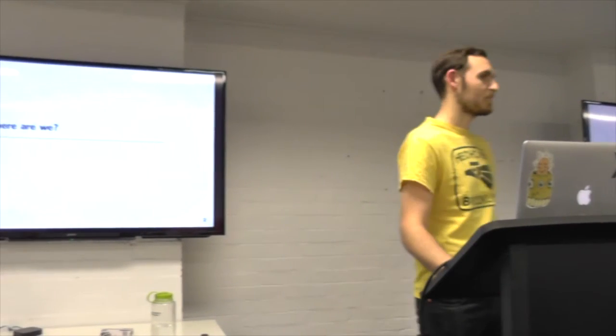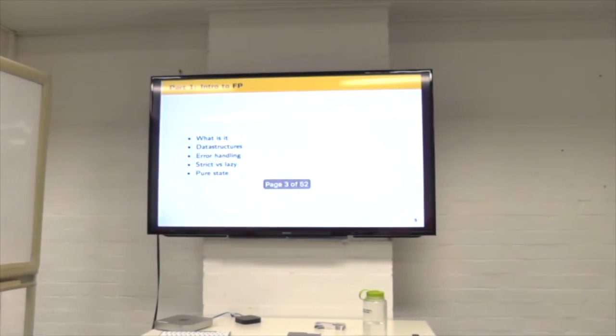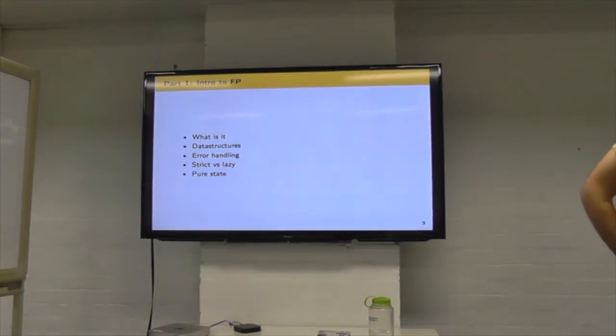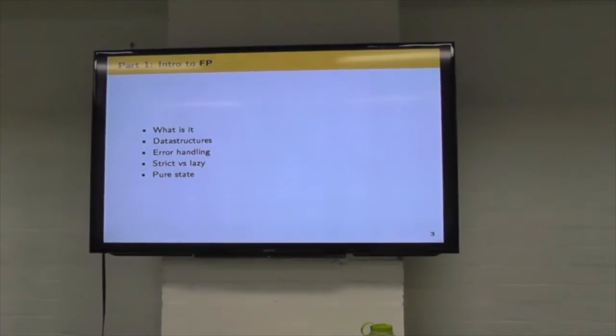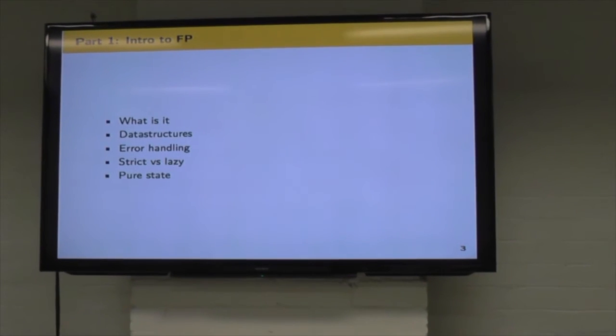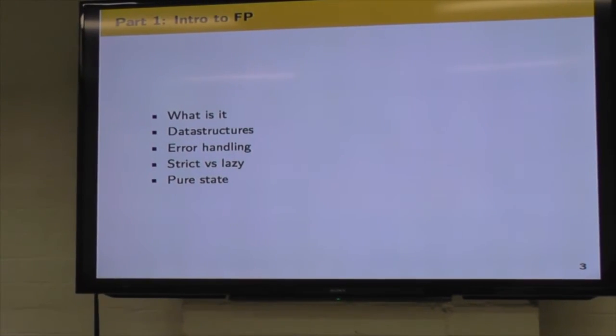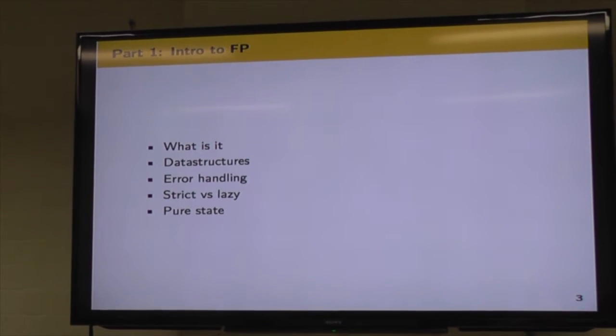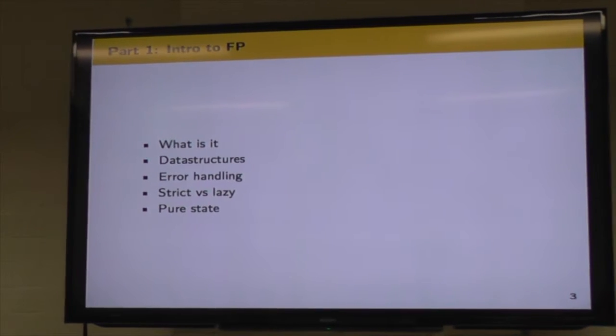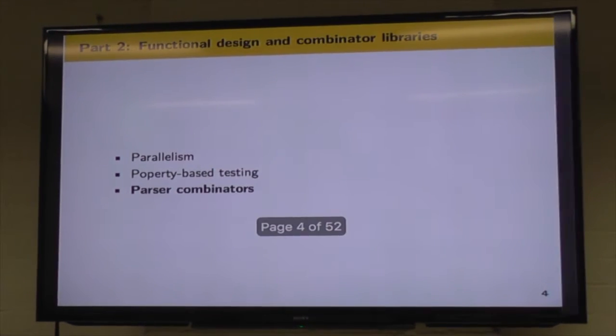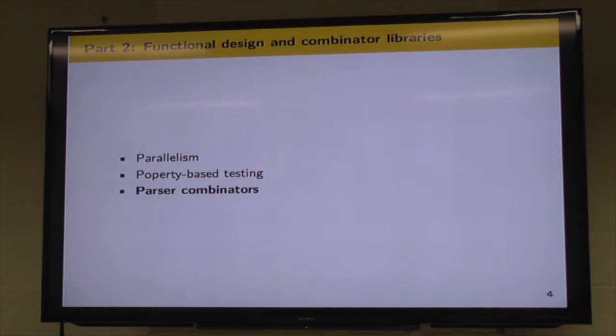I work at VLC and I'm talking about chapters 9 and 10 from FP in Scala. So I'd start off with a quick recap of what we've done so far. We've gone through part 1 already, had a look at what functional programming is, some basic data structures like lists and trees, error handling with values like option and either, strict versus lazy evaluation and pure state. Then we moved on to part 2, covered parallelism and property-based testing last month. And tonight I'm finishing off part 2 with parser combinators.